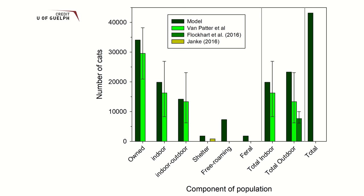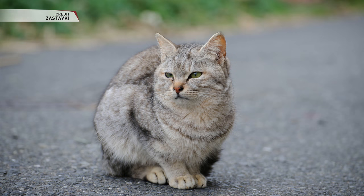But does this actually work? This model was validated by comparing it to studies where cat populations were measured in the field. It performed exceptionally well, matching the numbers for owned and sheltered cats. It seemed to over-predict the number of outdoor cats. However, if you've ever tried to trap a feral cat, you might know that it's not the easiest thing to do. Most official estimates of feral cat numbers are based on the number of feral cats trapped, which could be leading to low estimations of outdoor cat populations. So maybe this model might actually be closer to the true number.